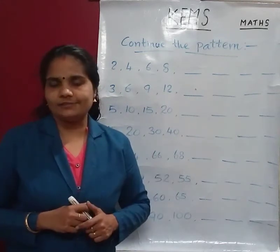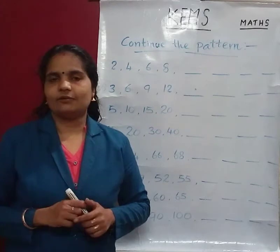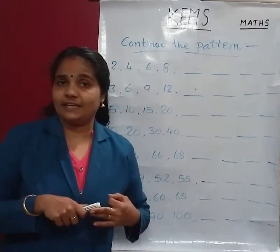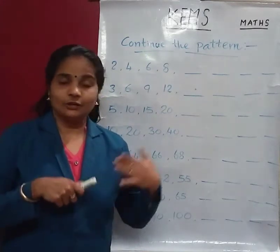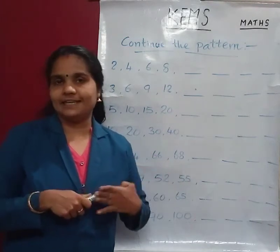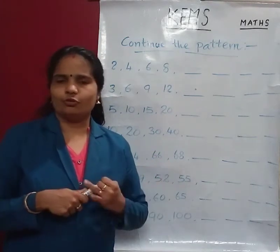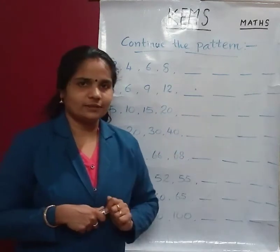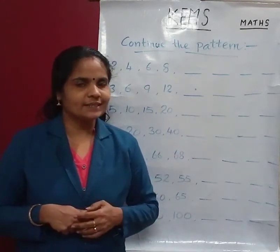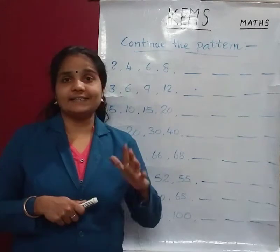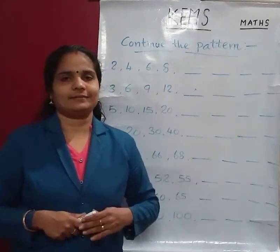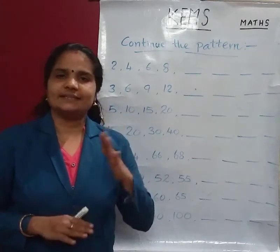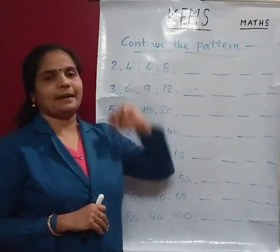Then, counting by fives: 5, 10, 15, 20, 25, 30, 35, 40, 45, 50 — and that is going on. You know that? Yes, that is skip counting. Skip counting. Okay, so that is the patterns.